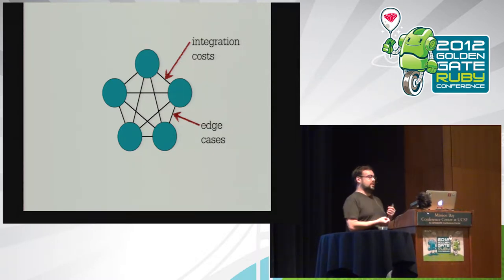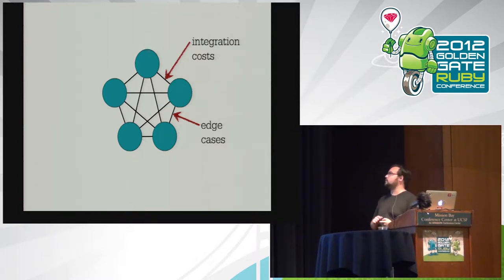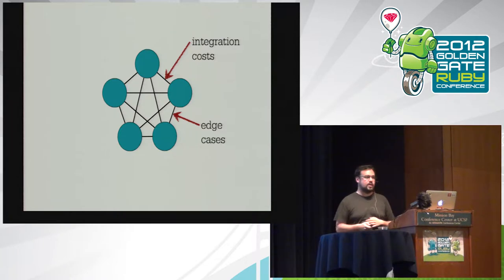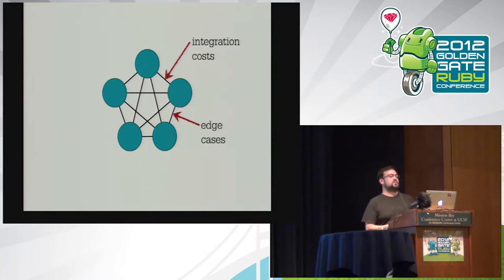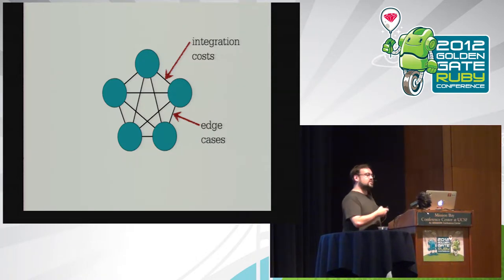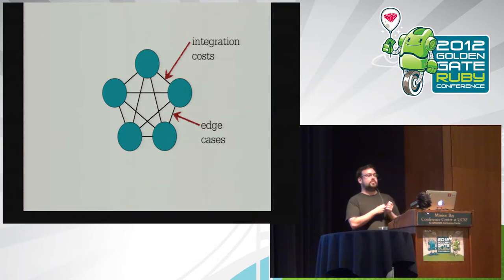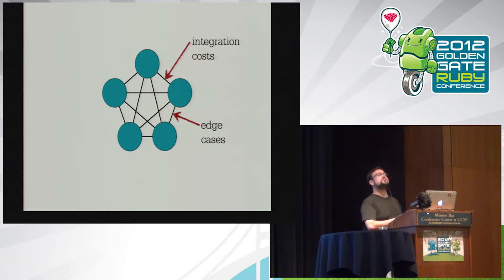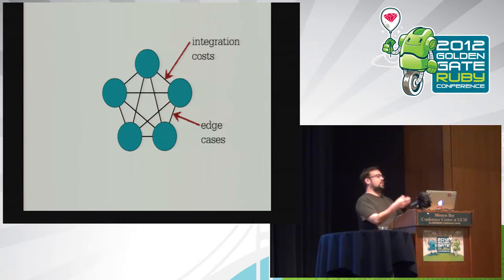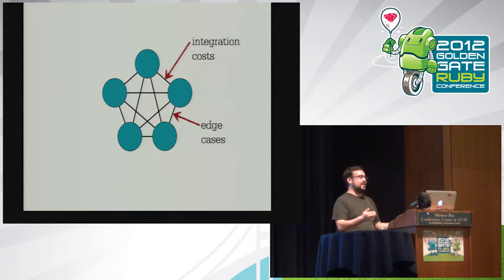When you build components in software, components connect to each other very promiscuously. Every link in the diagram represents a transaction cost. Typically the cost early on is on the end developer. You end up with Sinatra, Shotgun, and Erubis as separate libraries — who ends up being the person that pays the transaction cost for getting all these things together? That's Ford Motor Company. That's you, the person that actually puts it all together.